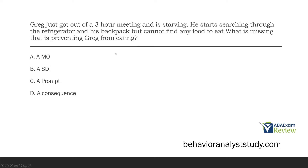Question two: Greg just got out of a three-hour meeting and is starving. He starts searching through the refrigerator and his backpack but cannot find any food to eat. What is missing that is preventing Greg from eating? Greg got out of a three-hour meeting and is starving — deprivation is taking place. Deprivation is related to motivating operations, because through deprivation the value of certain consequences increases. Eating has increased dramatically. The MO is present — there is motivation to eat because he is starving.